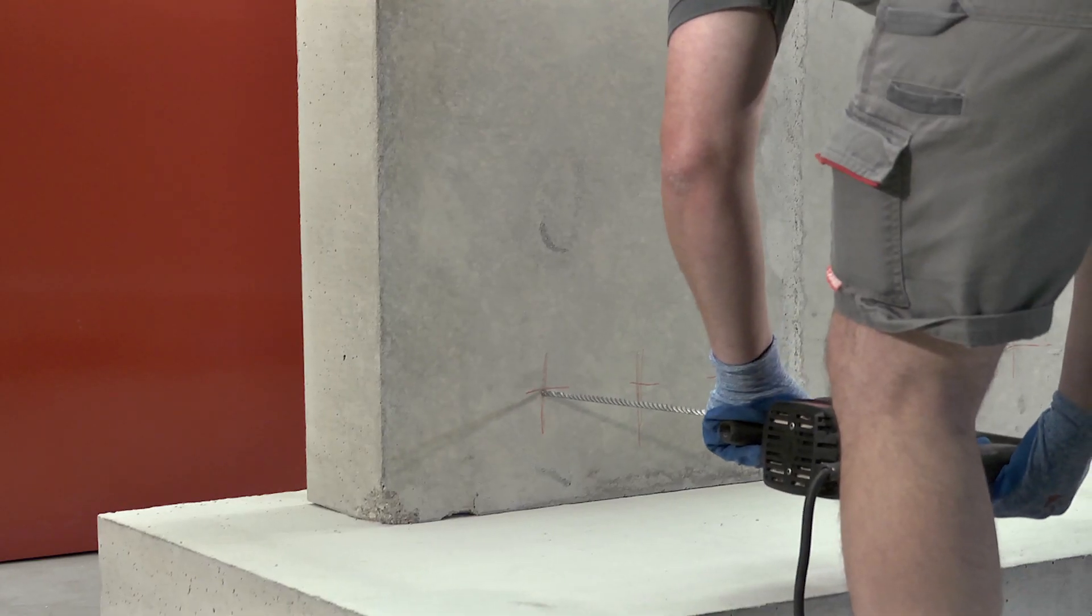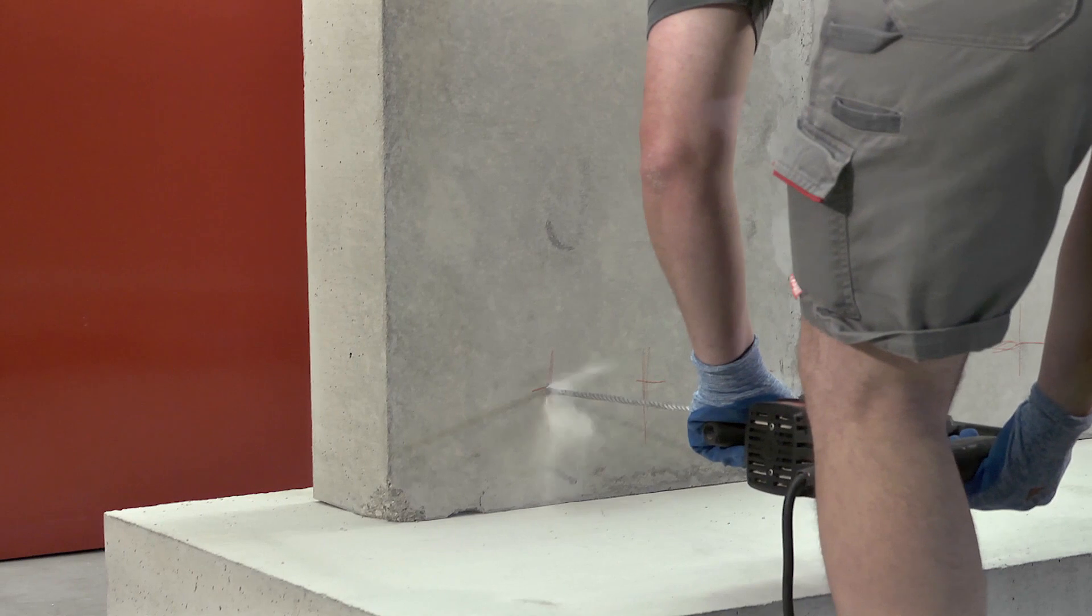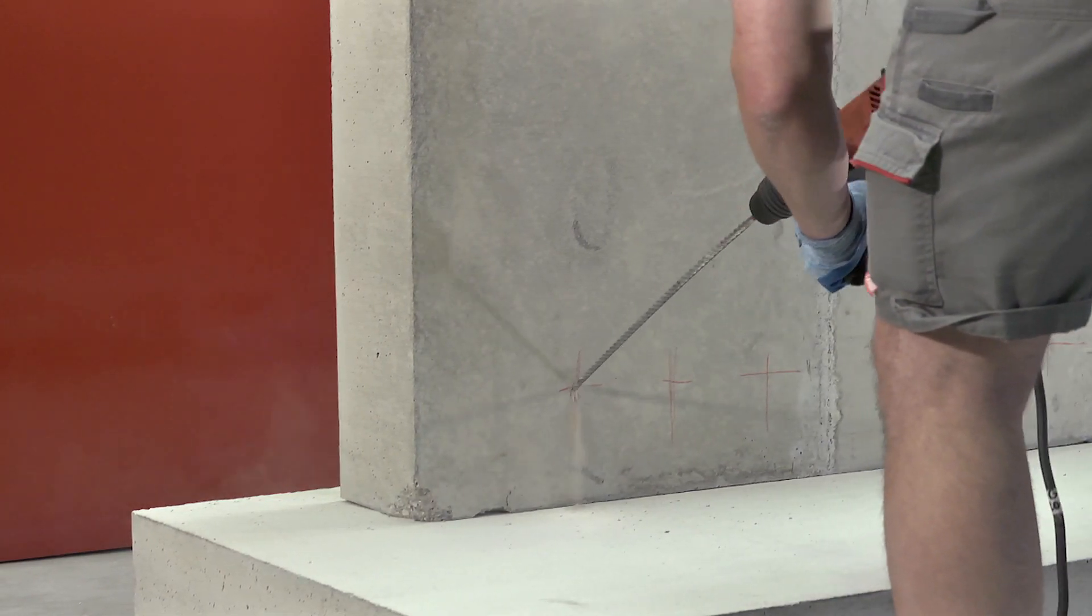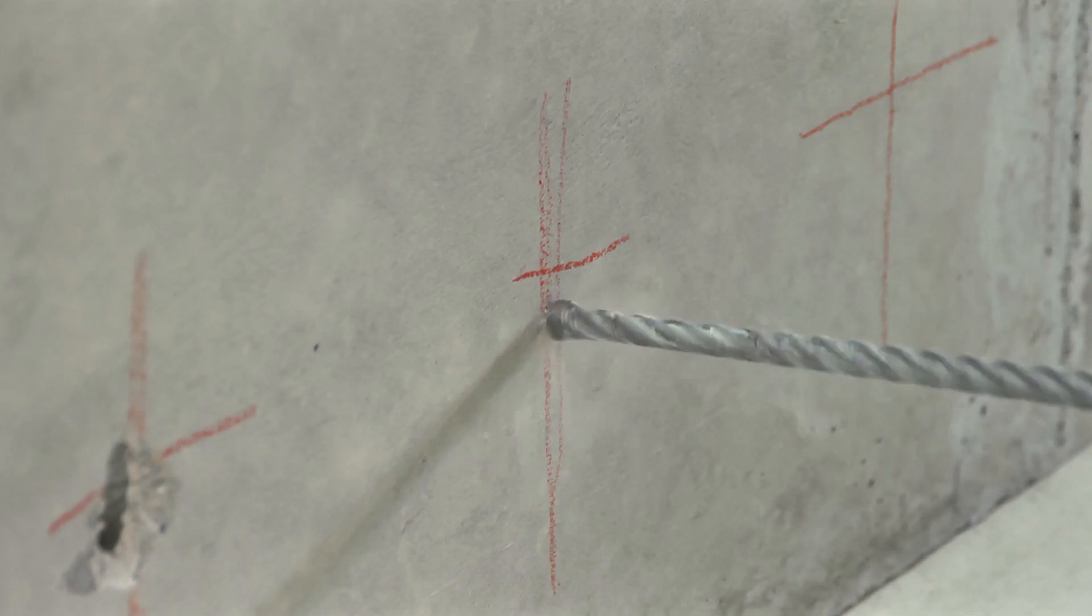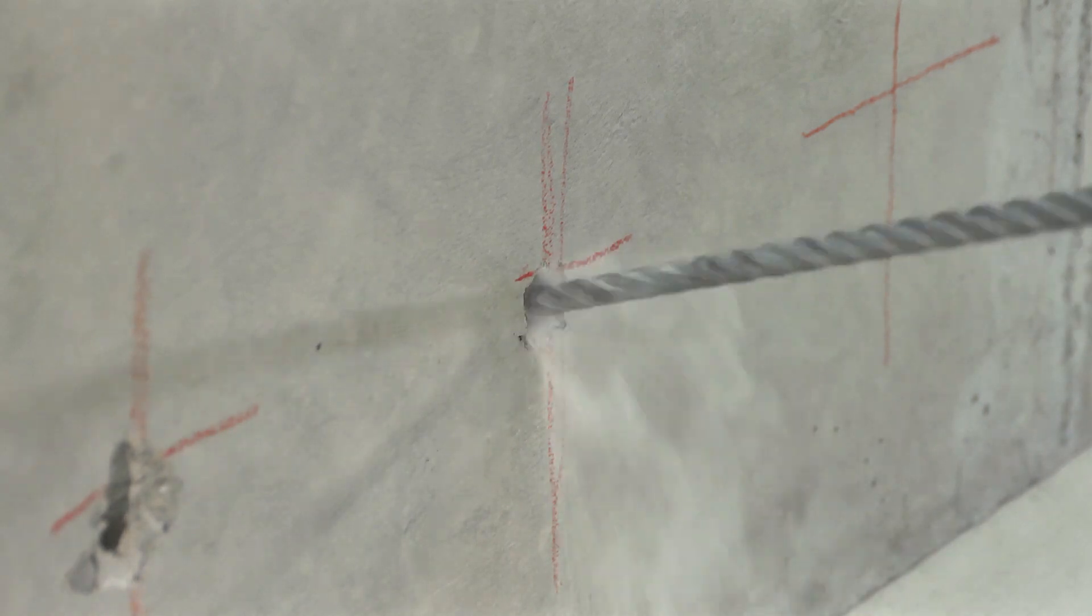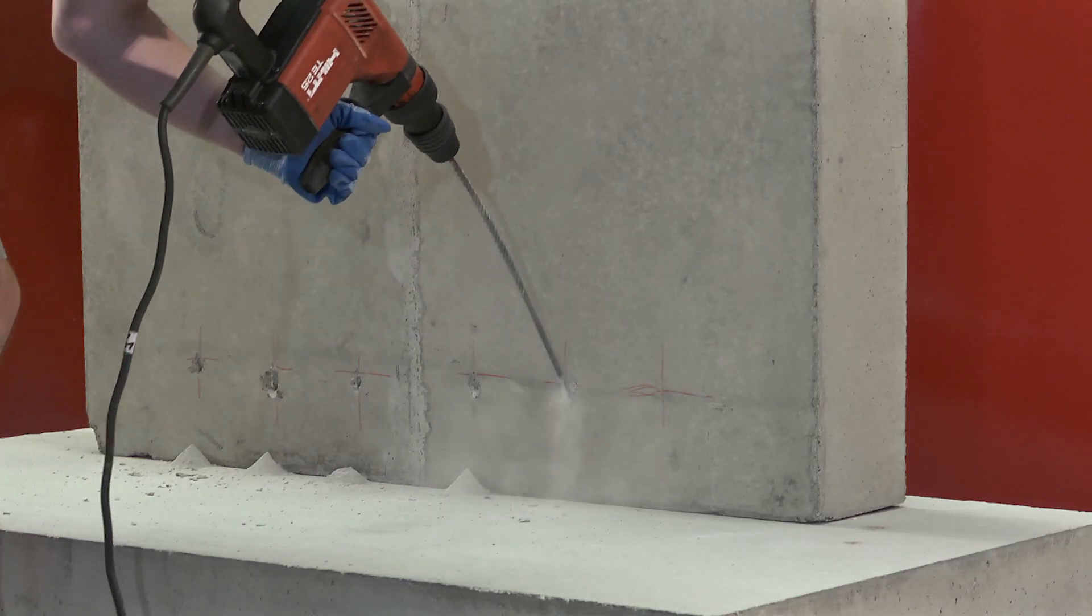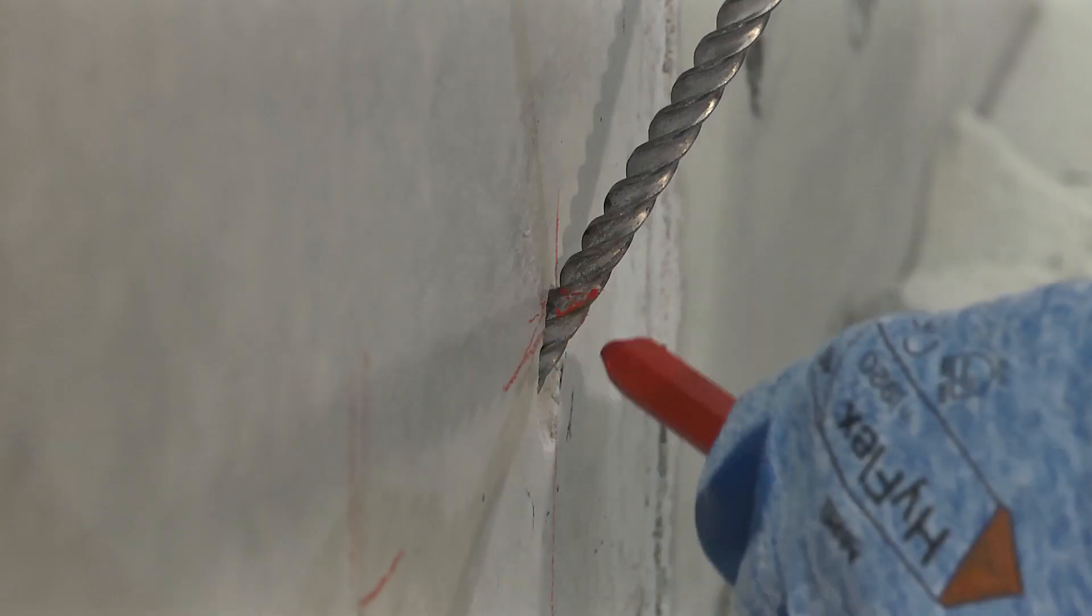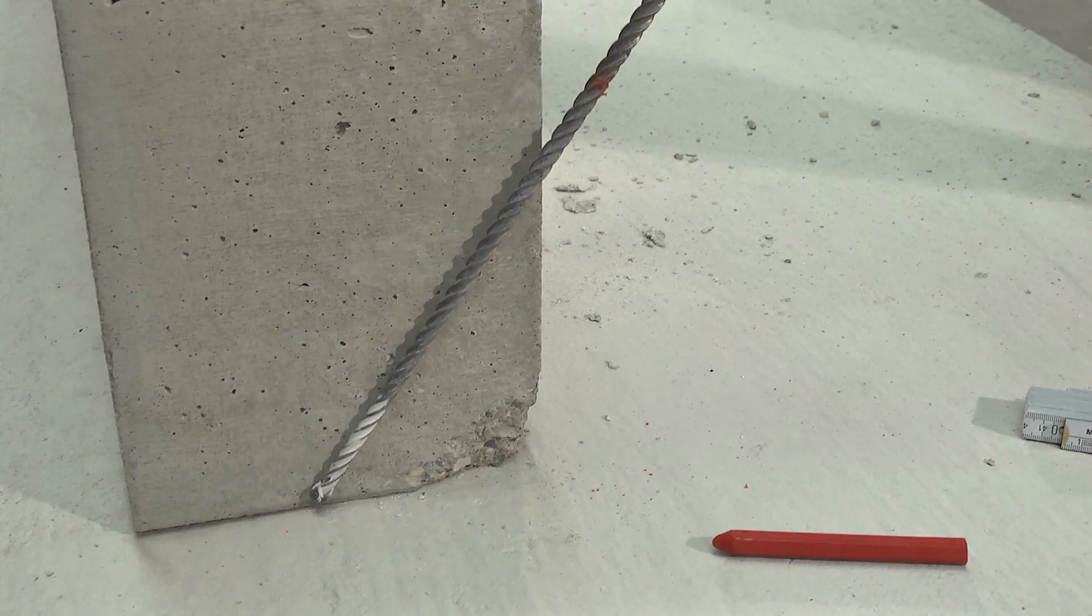Start drilling perpendicular at each injection point and subsequently pivot drill to an angle of 45 degrees. Continue to drill towards the joint center. It is essential that the drill hole penetrates the crack or joint. Therefore, the depth of the drilled hole should exceed the theoretical depth by at least 50 millimeters.